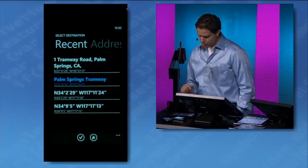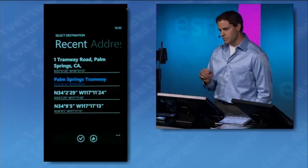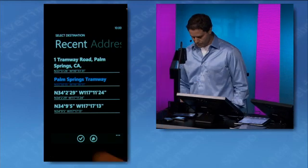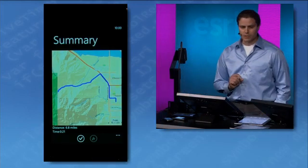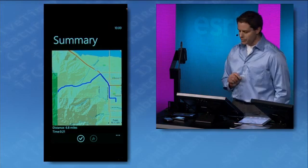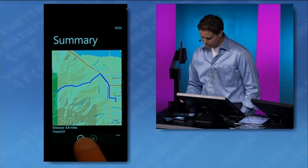Let's go to the Palm Springs tramway, which for those of you visiting Palm Springs, is a very popular tourist destination. What the API is doing now is calling our routing services and determining the most optimal route from point A to point B.